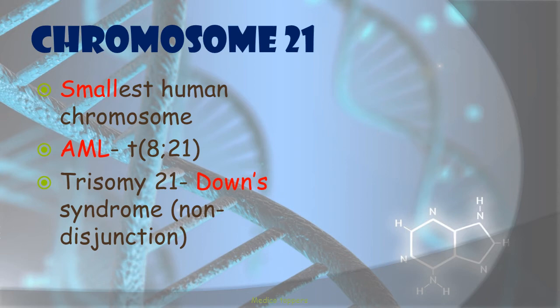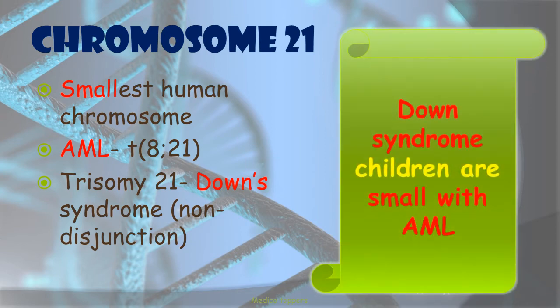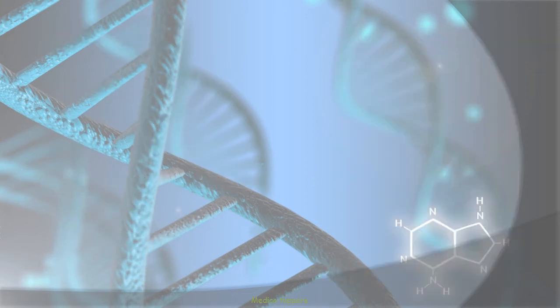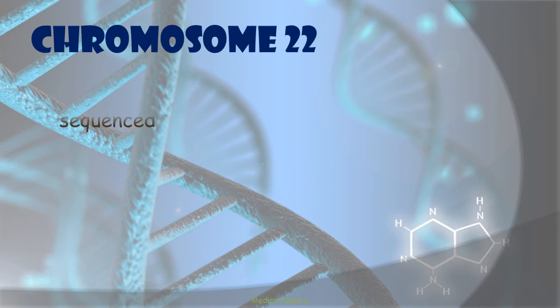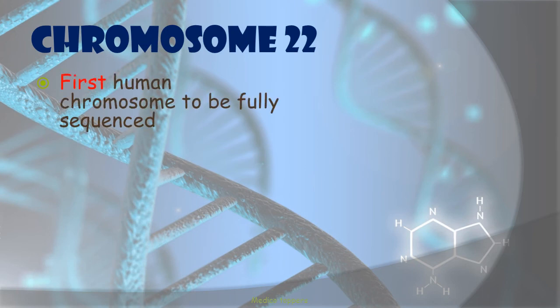We've already seen trisomy 13 as Patau syndrome and trisomy 18 as Edward syndrome. The mnemonic for chromosome 21 is 'Down syndrome children are small with AML,' because Down syndrome children have stunted growth — so it's 'small.' Chromosome 22 is the first human chromosome to be fully sequenced.